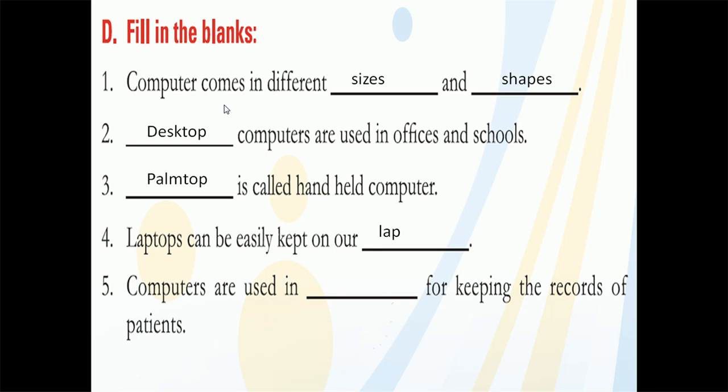Next: computers are used in blank for keeping the records of patients. Records means details like name, age, etc. At the hospital, the receptionist asks for your details — name, age — and gives you a computerized slip. So computers are used in hospitals for keeping the records of patients. The answer is hospital.